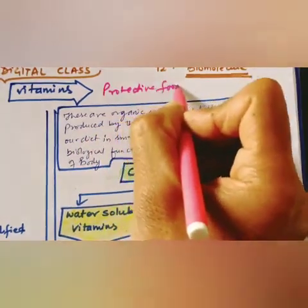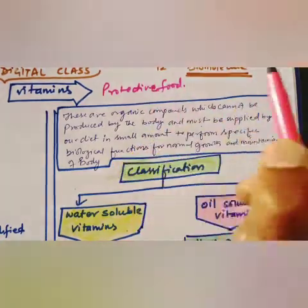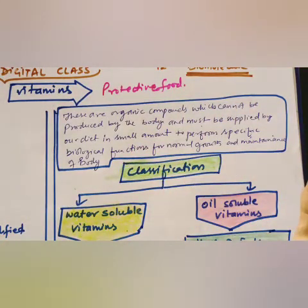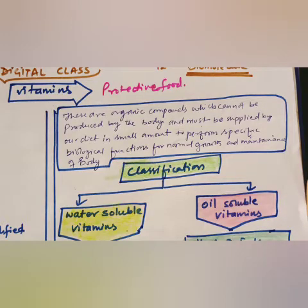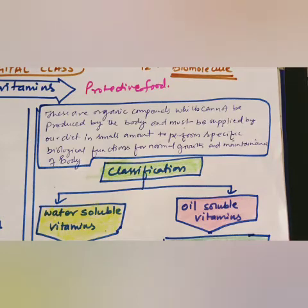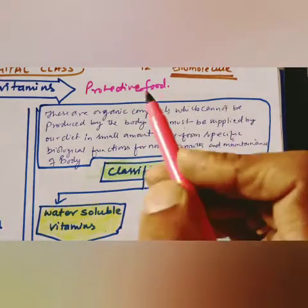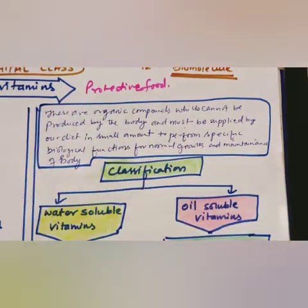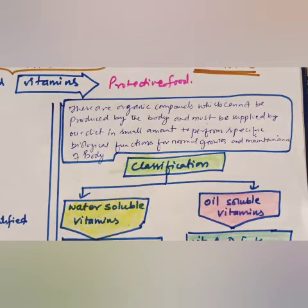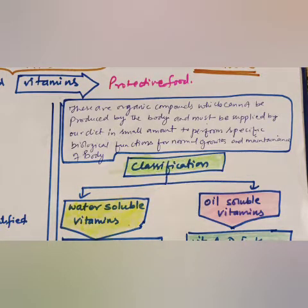Vitamins are known as protective food because their consumption helps strengthen the immune system. During the COVID-19 pandemic, medical experts advised taking vitamin C-rich fruits to strengthen immunity, since there was no vaccine available. Vitamins are organic compounds required in small amounts in the diet, and their deficiency causes specific diseases.